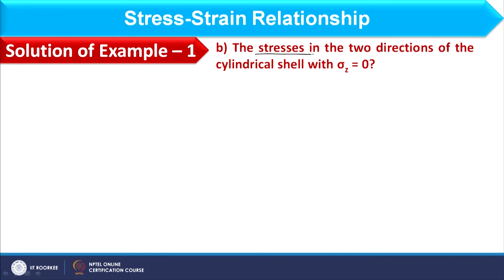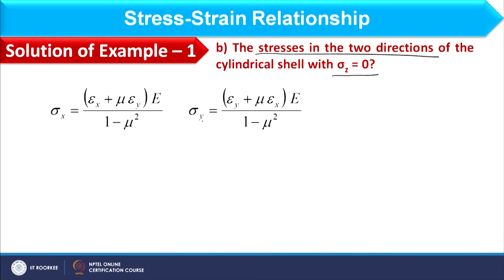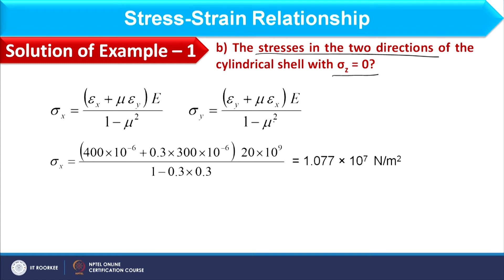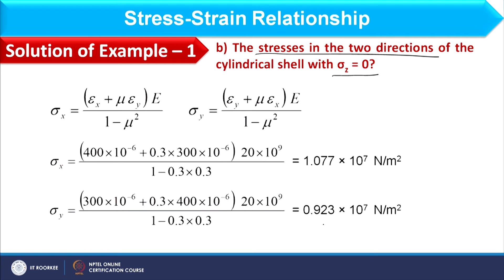In Part B, we find stresses in two directions of the cylindrical shell where σ_z = 0 — a biaxial system. Using the already-derived expressions for σ_x and σ_y as functions of ε_x and ε_y, and substituting the values of strain, E, and μ, we obtain σ_x = 1.077×10⁷ N/m² and σ_y = 0.923×10⁷ N/m². These values are directly formula-based: knowing stress allows calculation of strain and vice versa. This simple example covers both biaxial and triaxial systems.